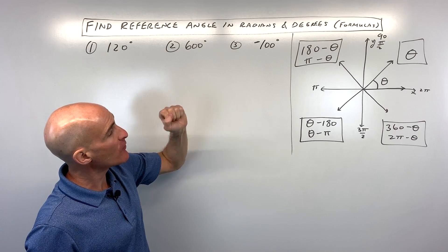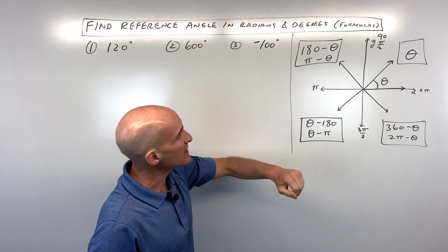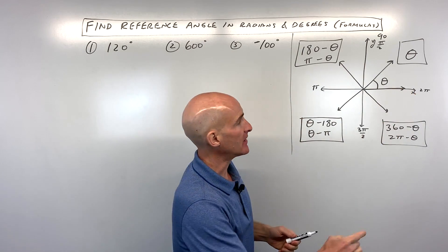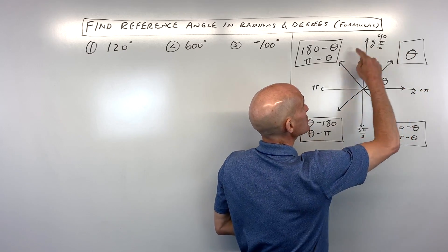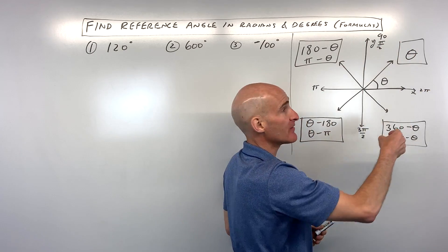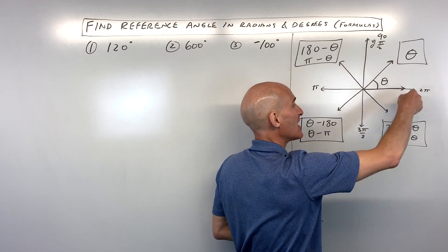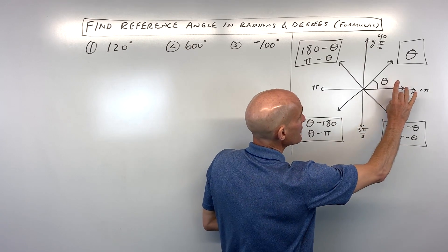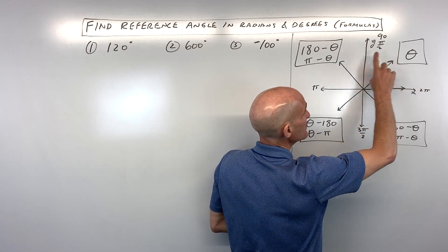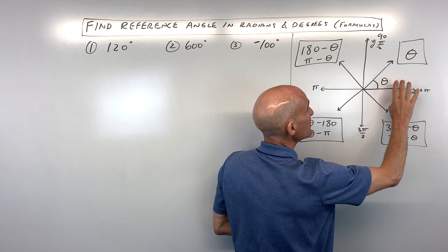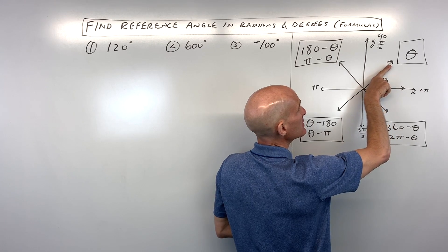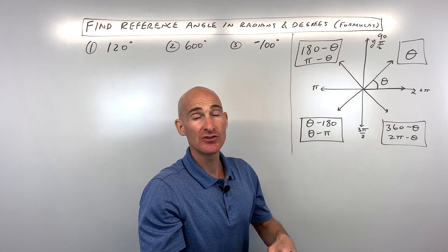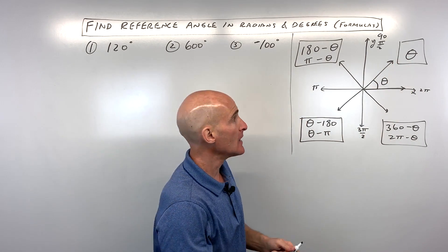With degrees, when you're working with an angle, it's kind of like a spinner. If you spin it counterclockwise, that's a positive angle. If you spin it clockwise, that's a negative angle. If we spin it counterclockwise and you end up in the first quadrant, the reference angle is just theta — whatever angle they give you.